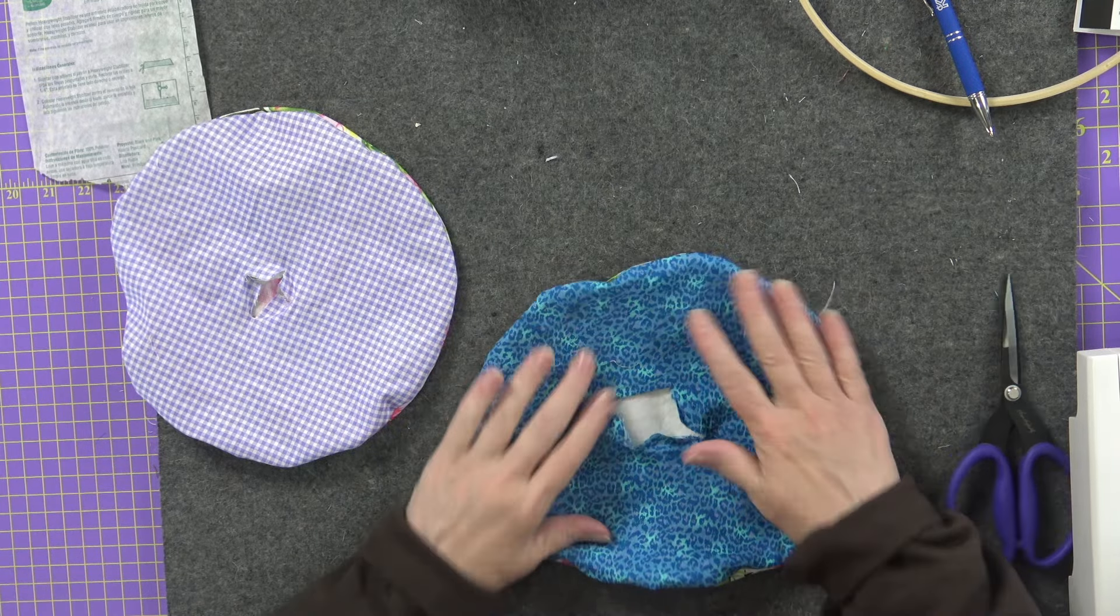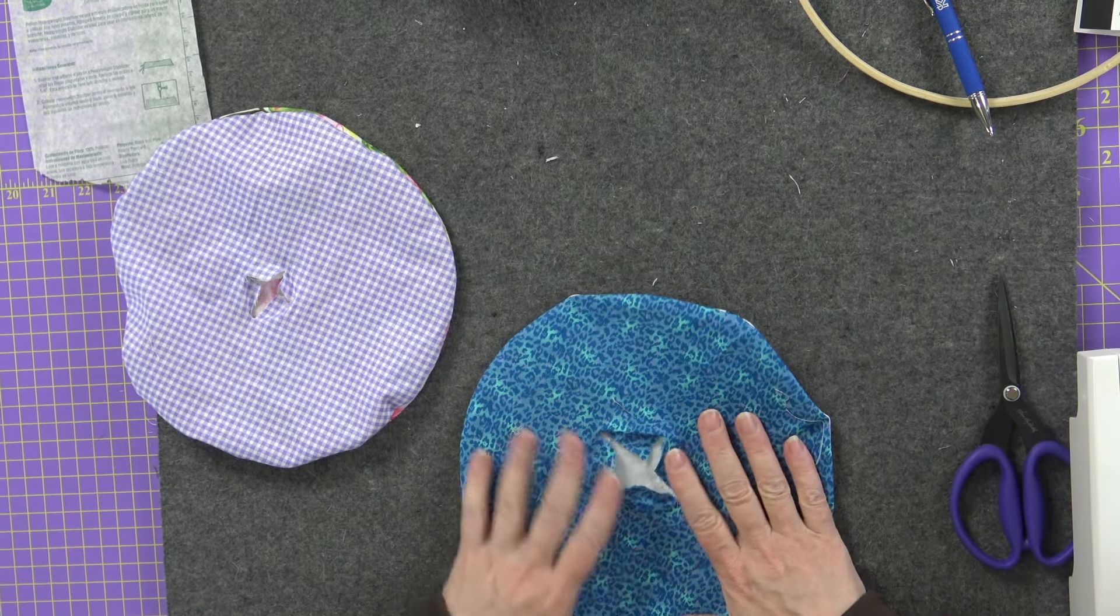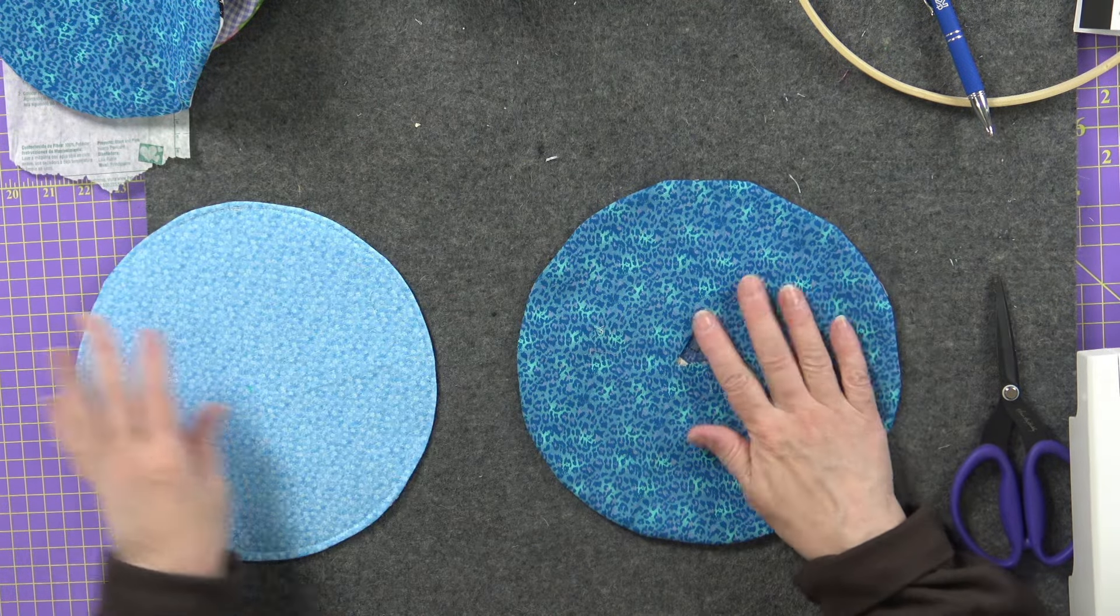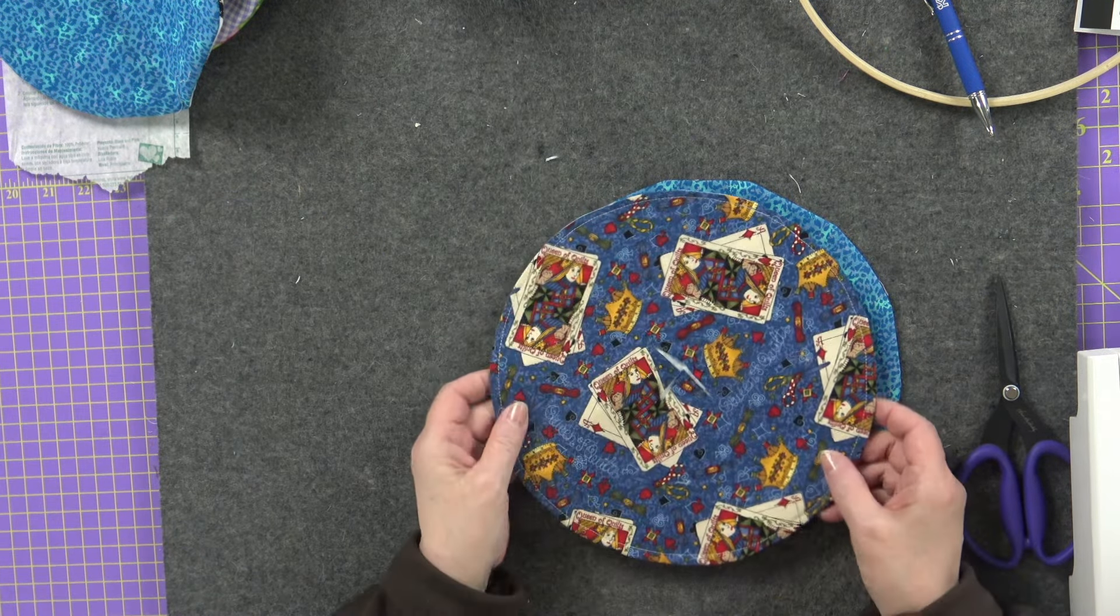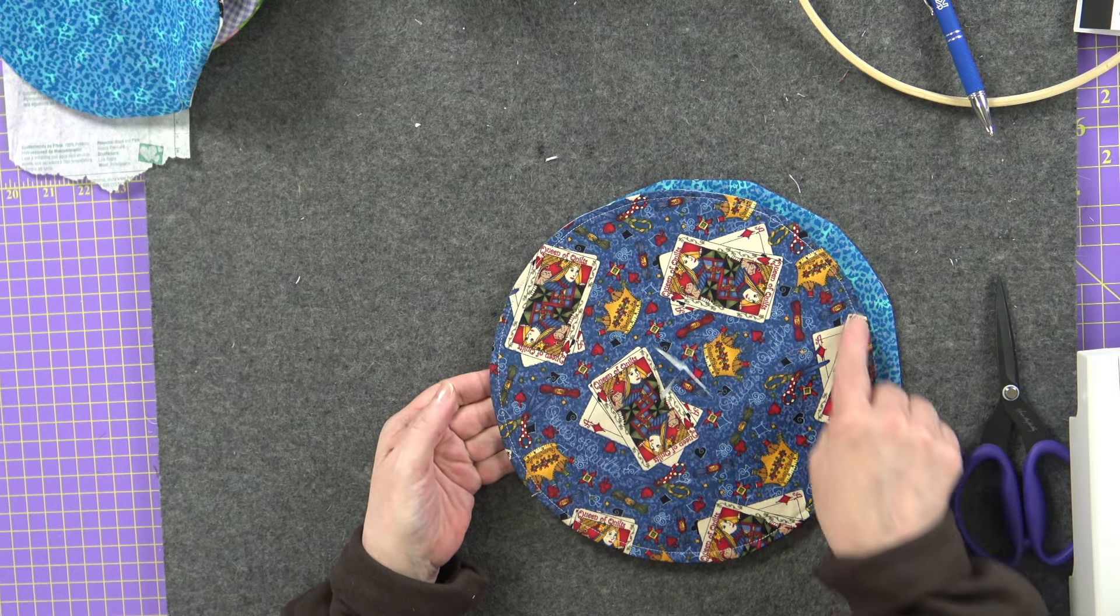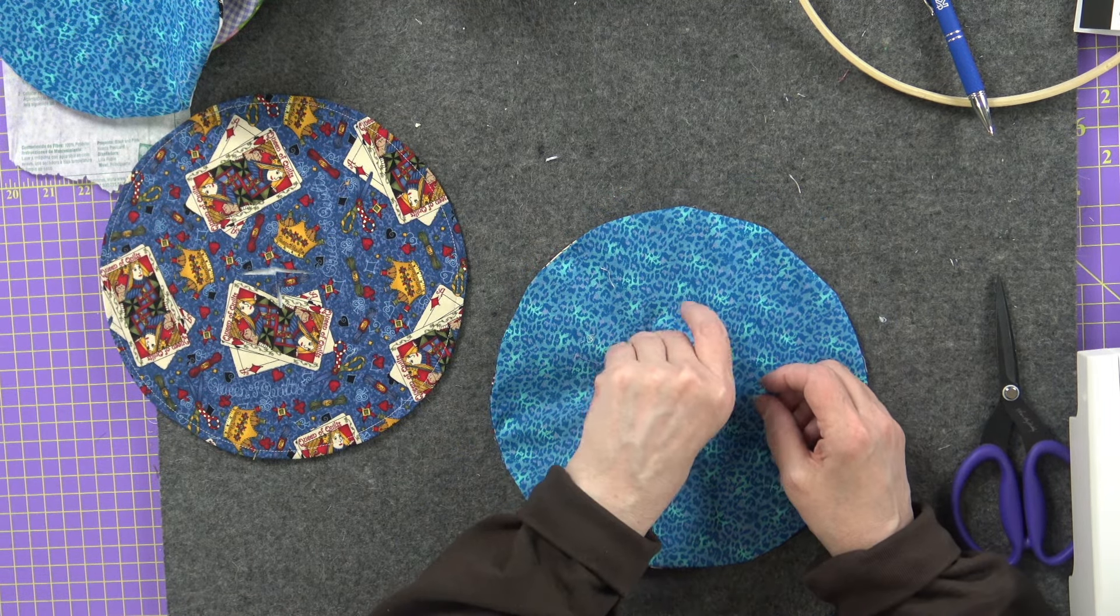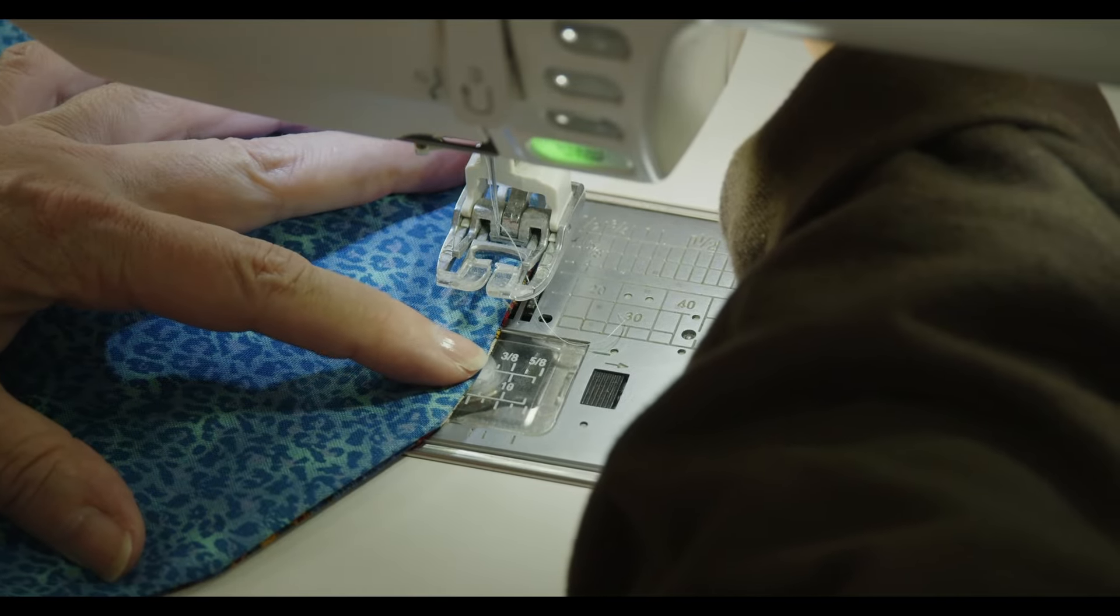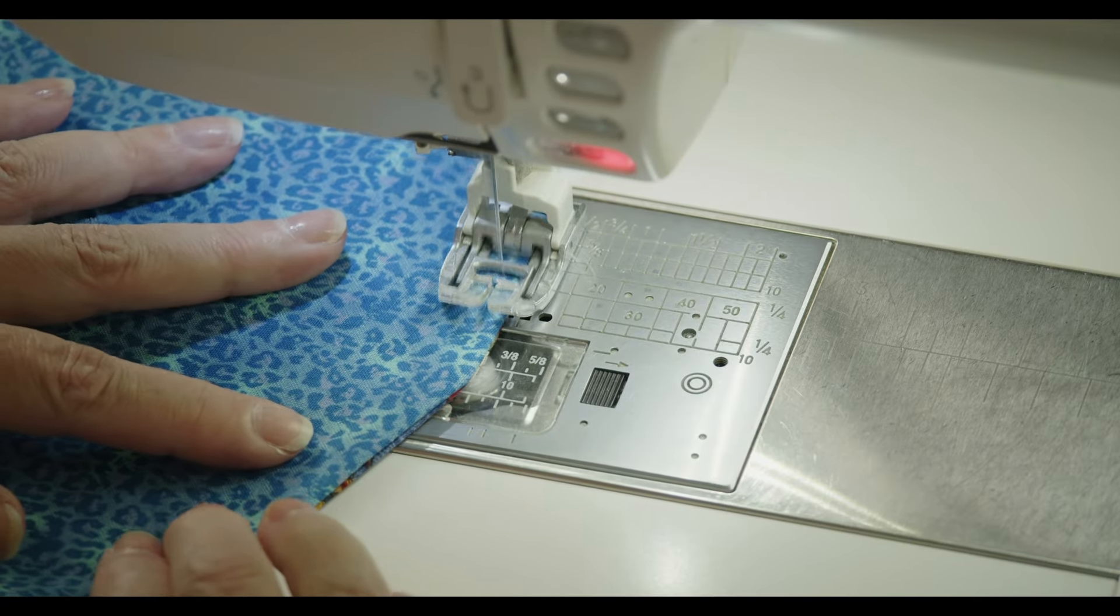And then once you get it all turned right side out, you're going to press it. You're going to press it nice and flat. And then do a top stitch around the outside edge. For both pieces. You can see they're turned right side out. They're nicely pressed. I'm going to do a little top stitch just to make it all nice and pretty.